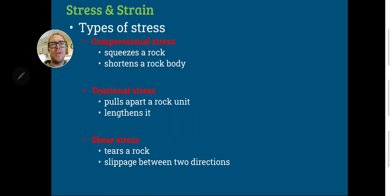Here are the three types of stresses we're going to talk about when we discuss faults. Compressional stress squeezes a rock and makes it shorter — that's when you're pushing something together. Tensional stress is when you're pulling something apart; it causes the rock to get thinner and longer. And then shear stress is when you're tearing something and it's slipping between two directions.